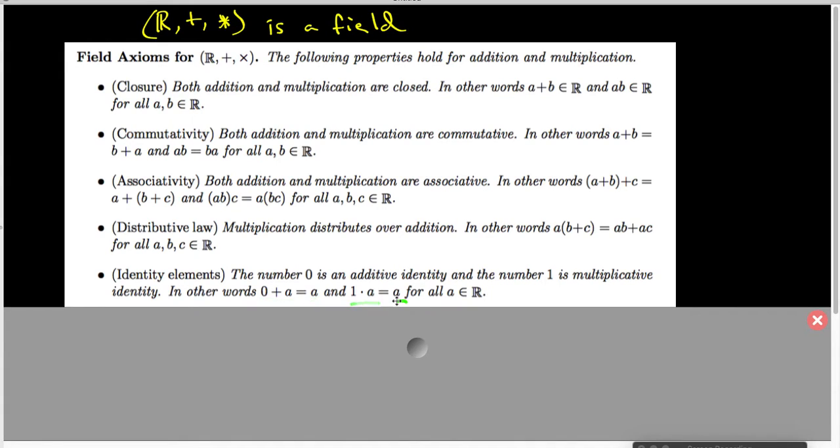Now, it's worth noting that the identity elements axiom does not say that zero and one are unique, nor does it actually specify that they are separate elements. Those are technically theorems, and we'll talk about that towards the end of this video.